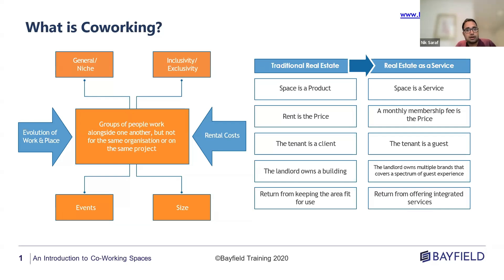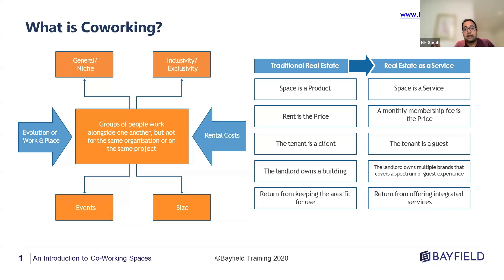Traditional rent contracts are typically three to five years, or as long as ten years. In a co-working space you pay a monthly membership fee, and some operators offer daily or weekly memberships as well. This means you don't need to commit to a long-term fee, which works particularly well for startups. When you're working for a startup in a growth phase, you don't know how quickly you'll scale or increase team size. A startup can start with as few as five seats and expand by ten more seats pretty easily, whereas in traditional real estate that would be very difficult.